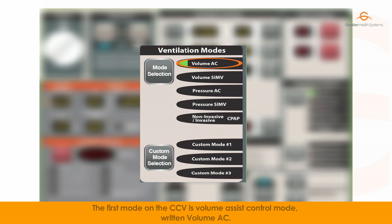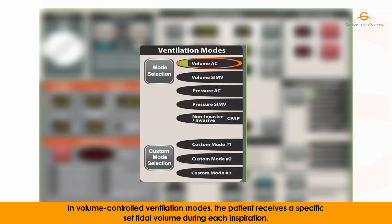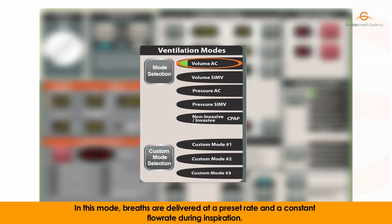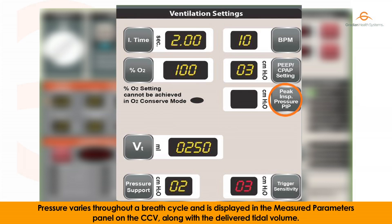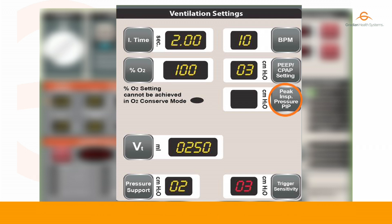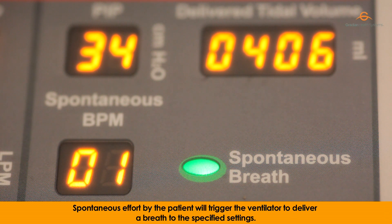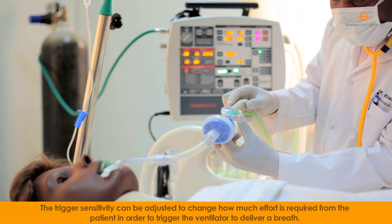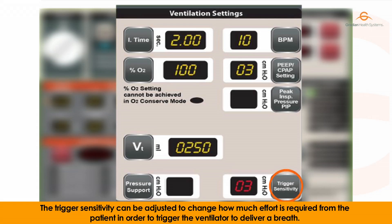In volume controlled ventilation modes, the patient receives a specific set tidal volume during each inspiration. In this mode, breaths are delivered at a preset rate and a constant flow rate during inspiration. Pressure varies throughout a breath cycle and is displayed in the measured parameters panel on the CCV along with the delivered tidal volume. Spontaneous effort by the patient will trigger the ventilator to deliver a breath to the specified settings. The trigger sensitivity can be adjusted to change how much effort is required from the patient in order to trigger the ventilator to deliver a breath.